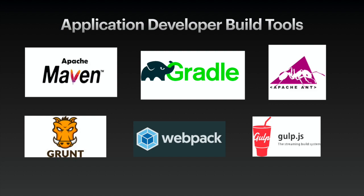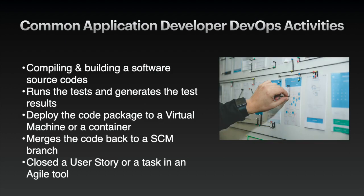Here's a table showing some commonly suggested build tools. For Java: Apache Maven, Apache Ant, and Apache Gradle. For JavaScript: Grunt, Webpack, and Gulp. For Python: Fabricate, Pint, and Fabric. Common application development DevOps activities include: compiling and building software source code, running tests and generating test results, deploying code packages to a virtual machine or container, merging code back to an SCM branch, and closing a user story or task in an agile tool.